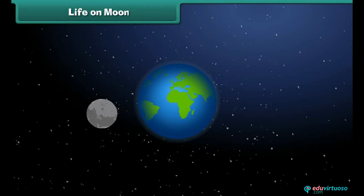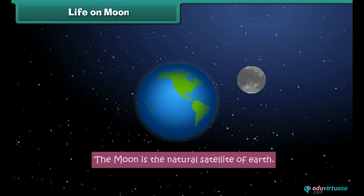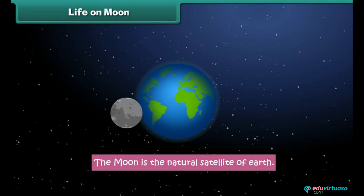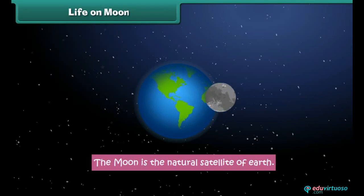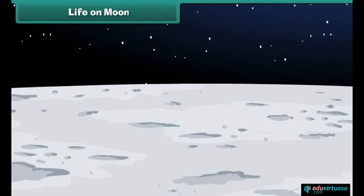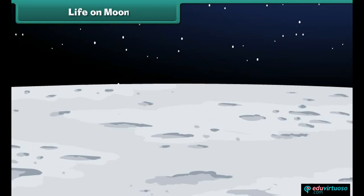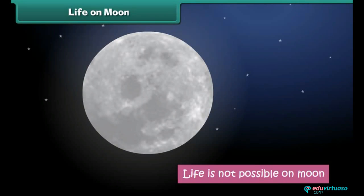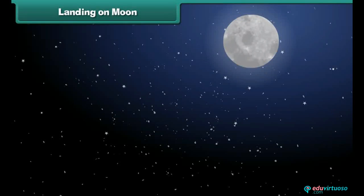Life on the Moon: though the Moon is the natural satellite of Earth, it is very different from Earth. There is no air, water, or food on the Moon, and therefore life is not possible on it.